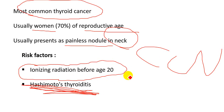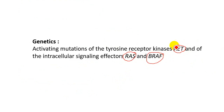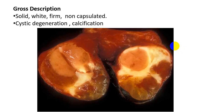The second risk factor is Hashimoto thyroiditis — some cases of Hashimoto thyroiditis may progress to papillary carcinoma of the thyroid gland. Regarding genetics, there are three important gene mutations associated with papillary carcinoma of the thyroid gland: the RET gene, RAS gene, and BRAF gene. The RET gene is also associated with medullary carcinoma of the thyroid gland and with multiple endocrine neoplasia.